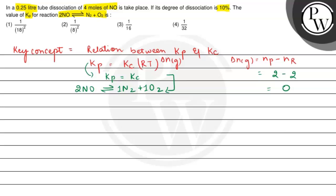So using this concept, Kp is equal to Kc. And here the reaction at t=0 is 4 moles. At equilibrium, it will be 4 minus 4 alpha and 2 alpha and 2 alpha for N2 and O2. And the degree of dissociation, which is alpha, we have given as 0.1.